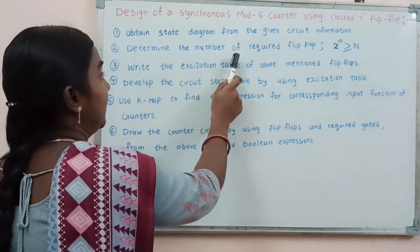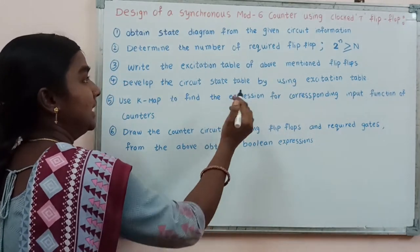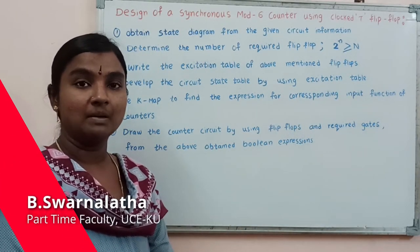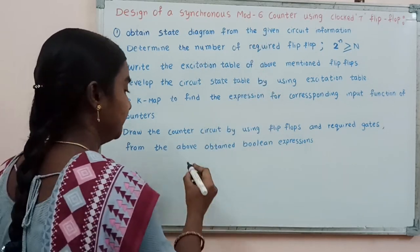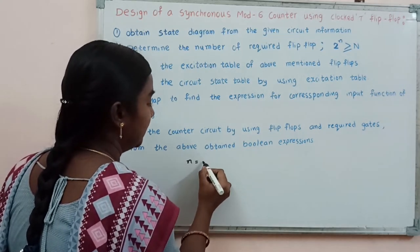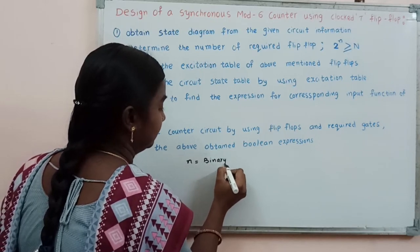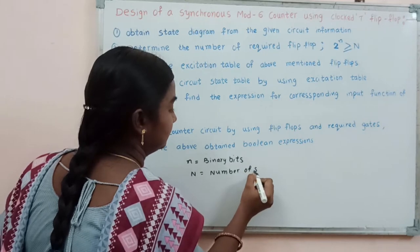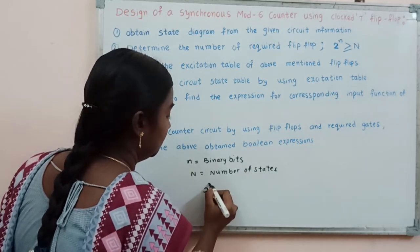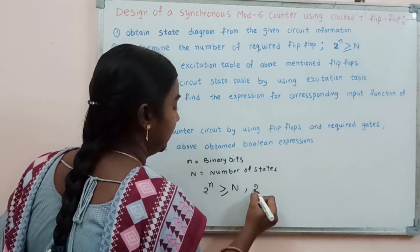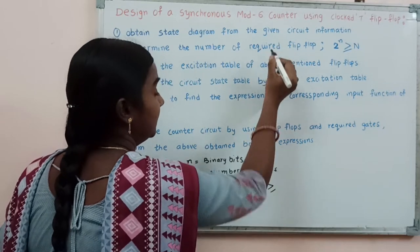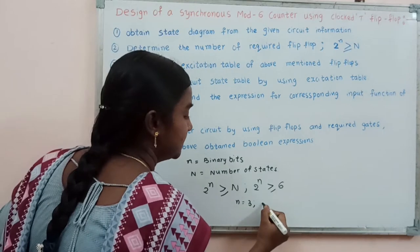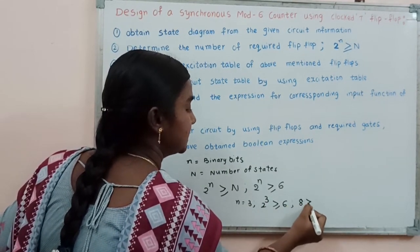The second step is to determine the number of required flip flops. We use the equation 2^n ≥ N, where small n is the number of binary bits and capital N is the number of states. For this mod 6 counter, N equals 6. For small n equal to 3, this equation is satisfied since 2^3 = 8 is greater than or equal to 6.